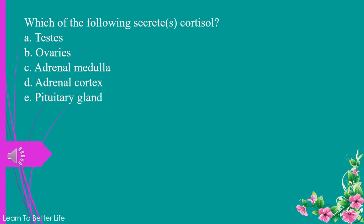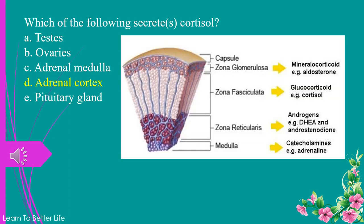Which of the following secretes cortisol? a. testes. b. ovaries. c. adrenal medulla. d. adrenal cortex. e. pituitary gland. The answer is d. adrenal cortex.